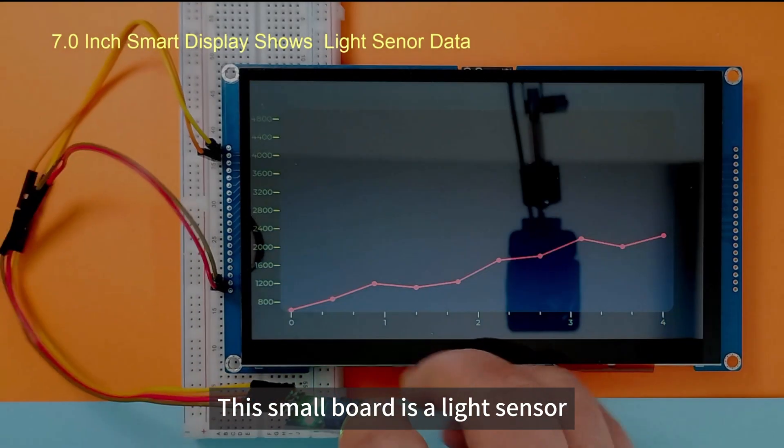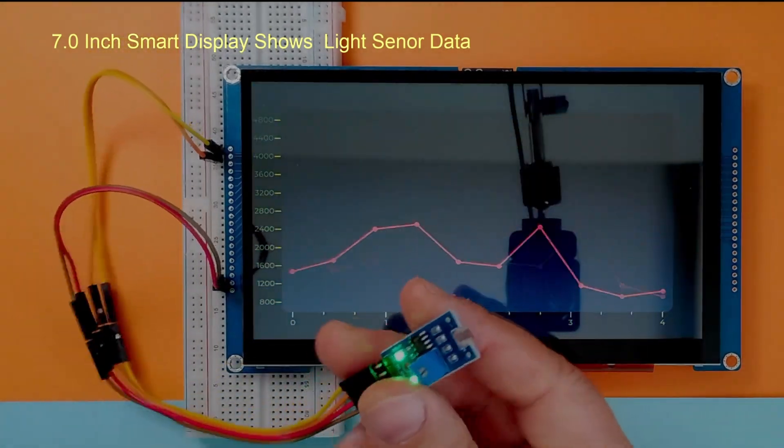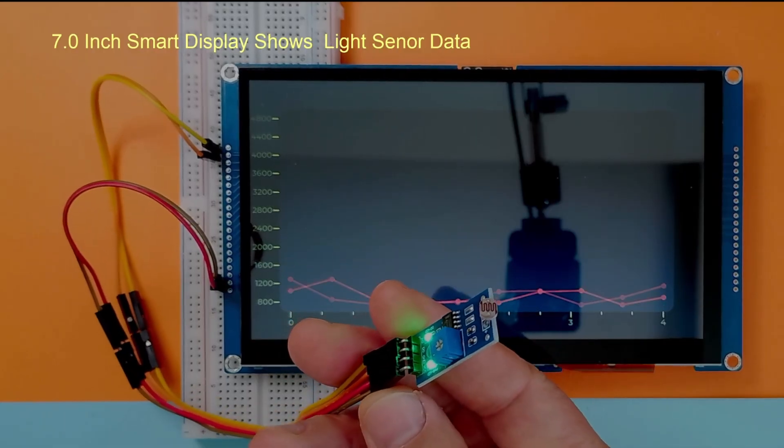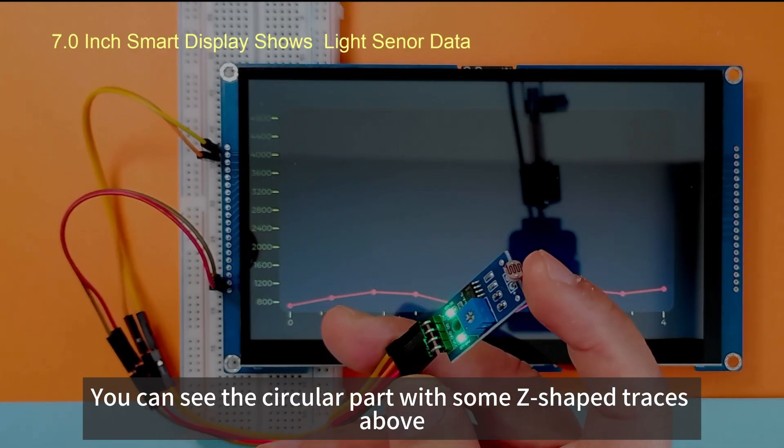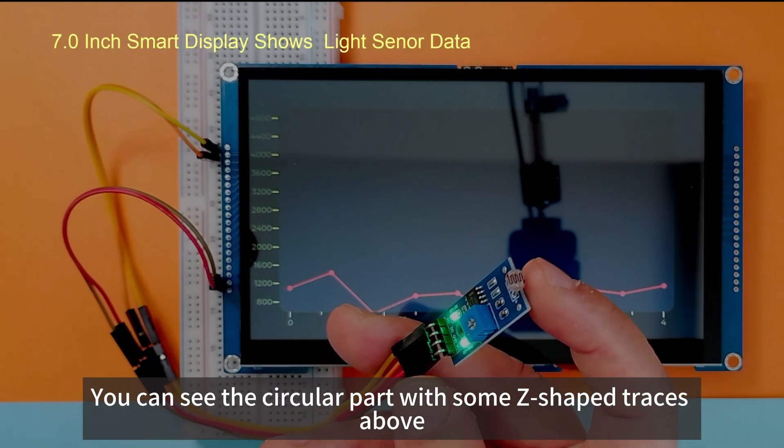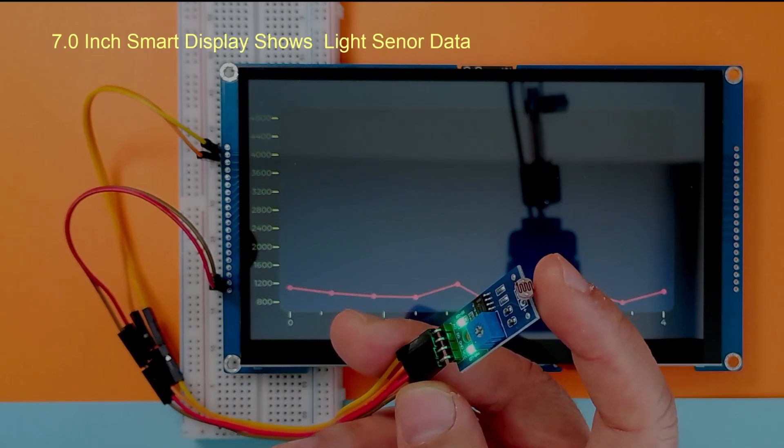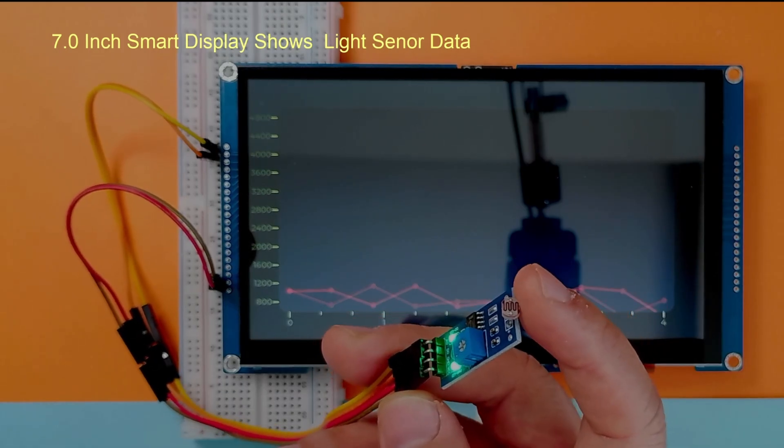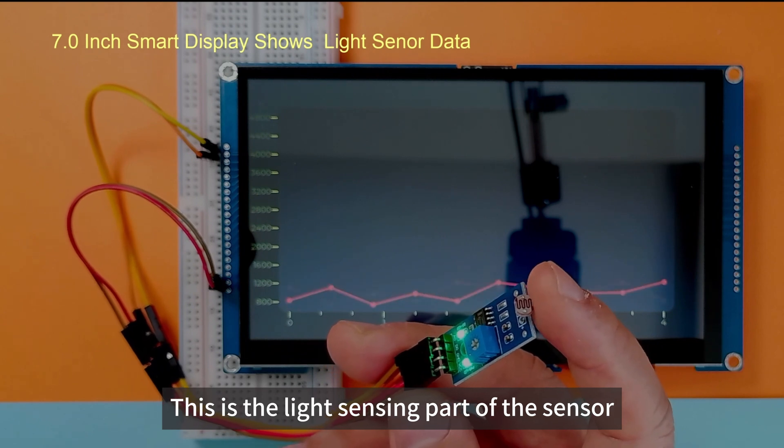This small board is a light sensor. You can see the circular part with some Z-shaped traces above. This is the light sensing part of the sensor.